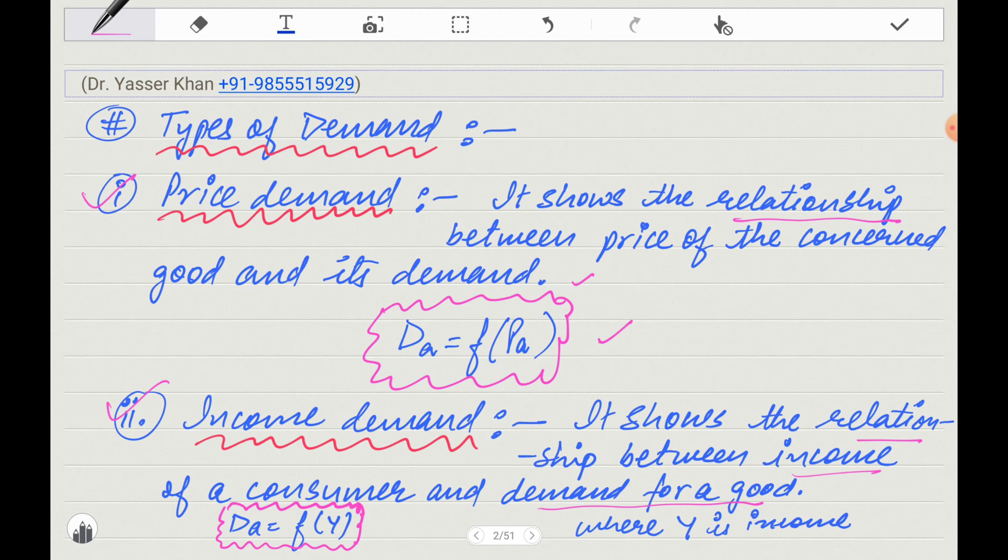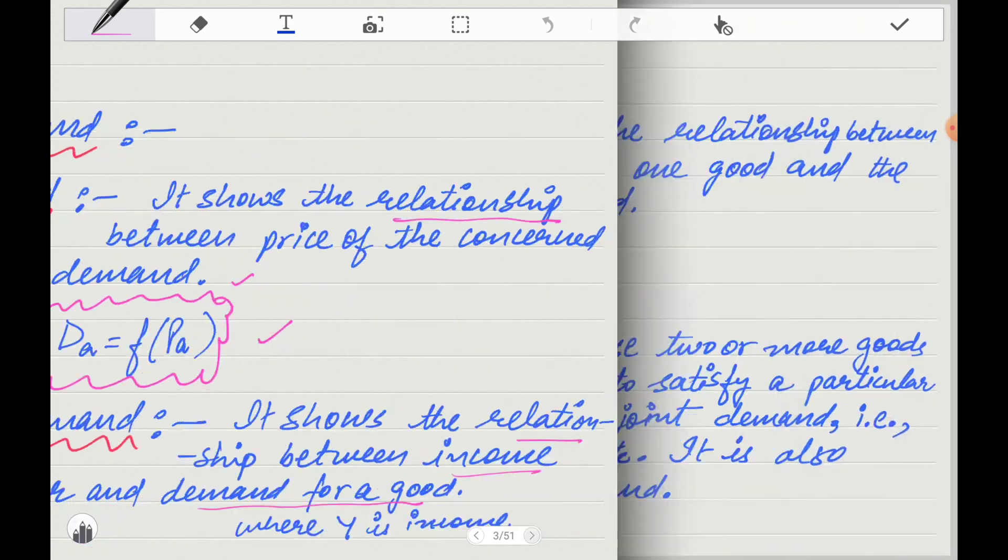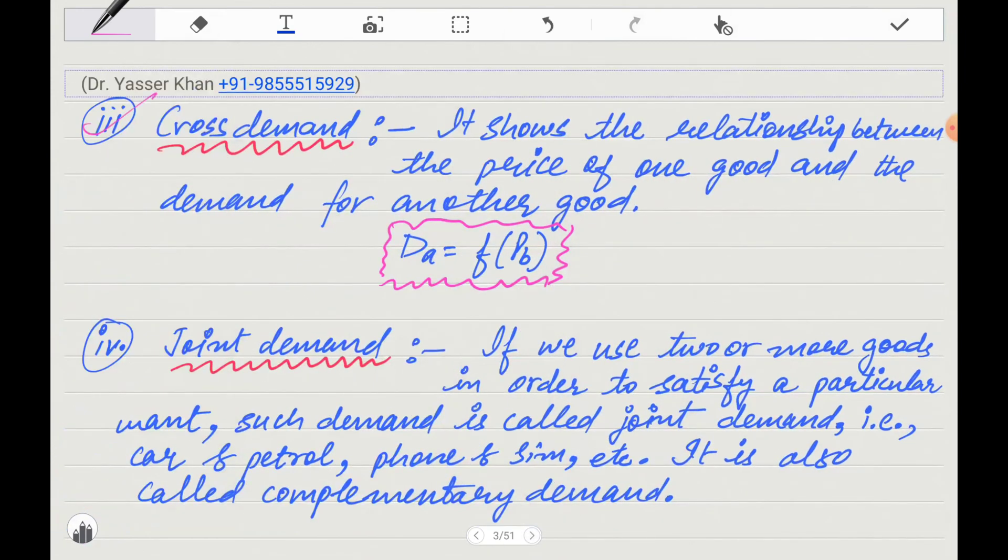Next page, cross demand. Cross demand means the relationship between price of one good and demand for another good. For example, petrol. It shows the relationship between the price of one good and the demand for another good. Here the example is demand for A is a function of price of B, meaning demand for A depends on price of B.